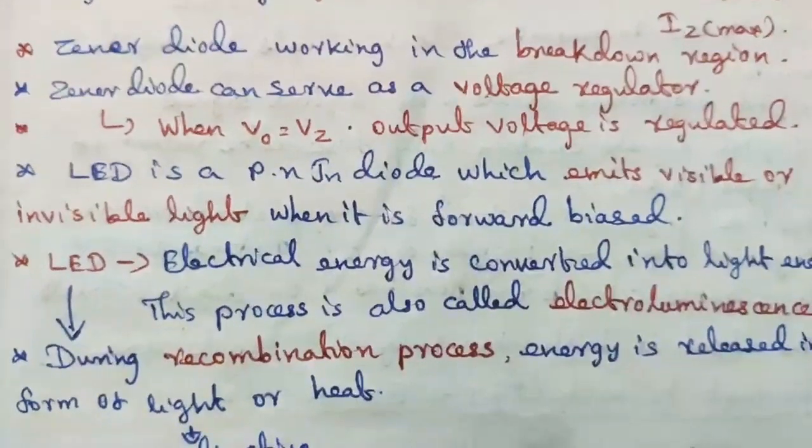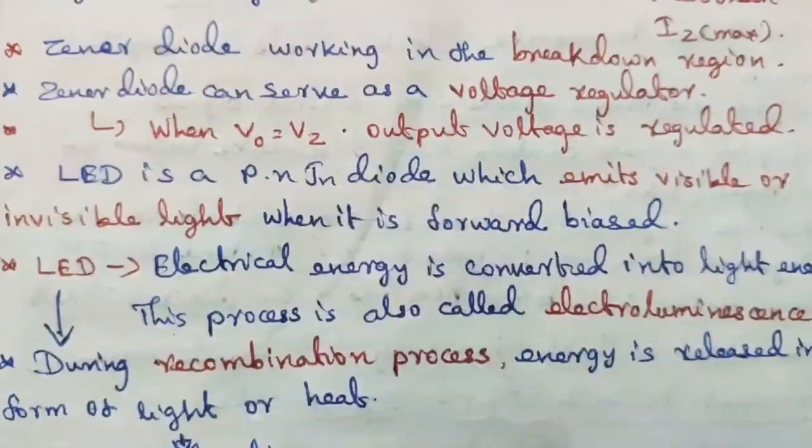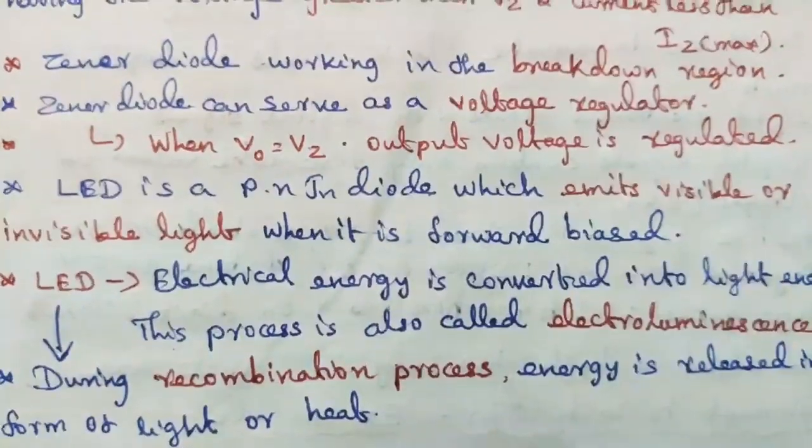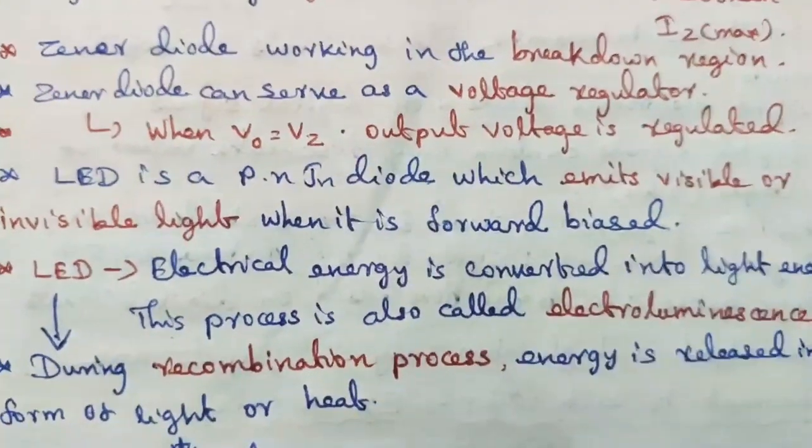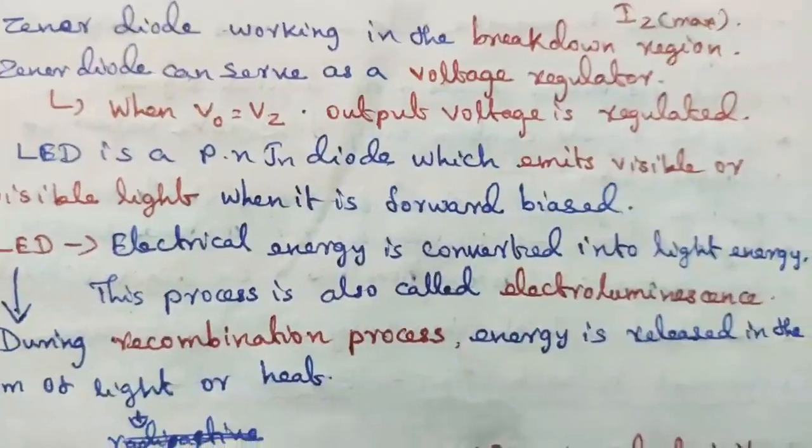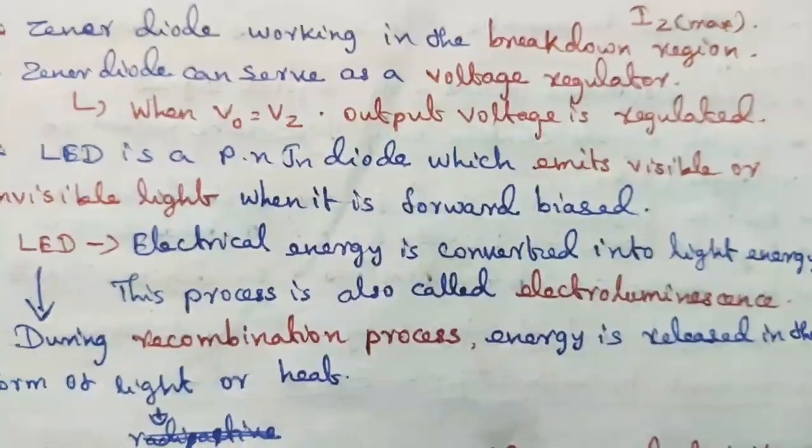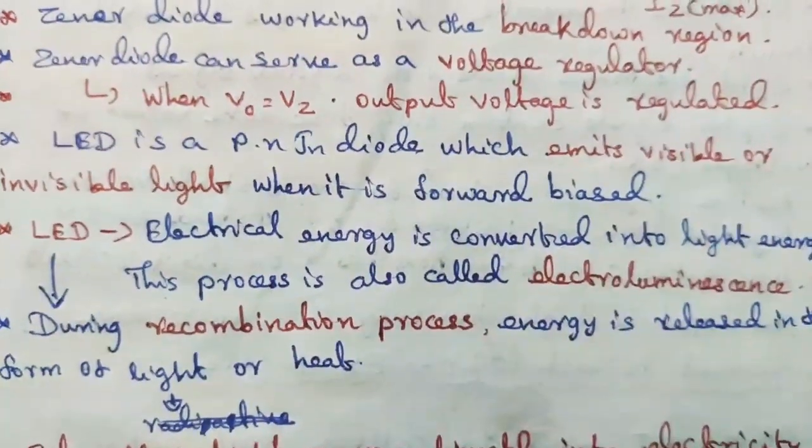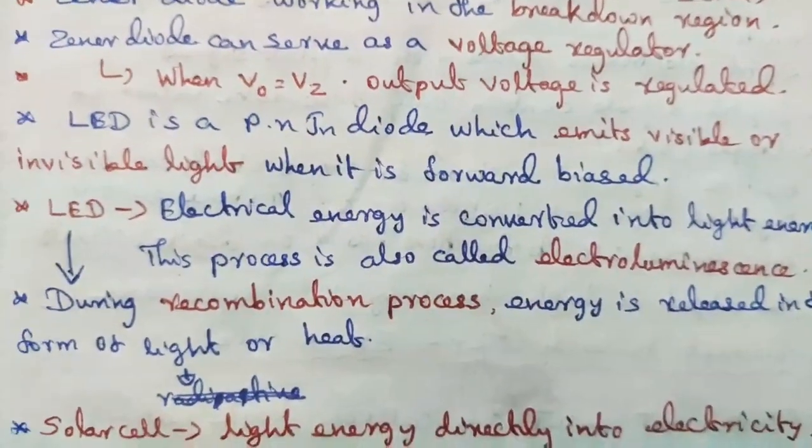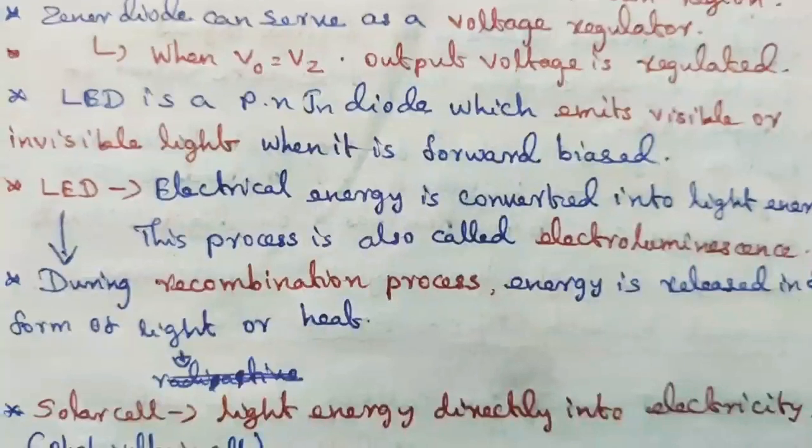LED is a p-n junction diode which emits visible or invisible light when it is forward biased. In LED, electrical energy is converted into light energy. This process is also called electroluminescence. During recombination process, energy is released in the form of light or heat.